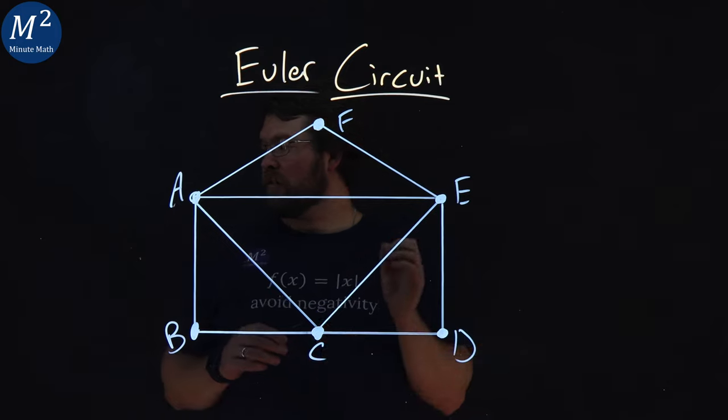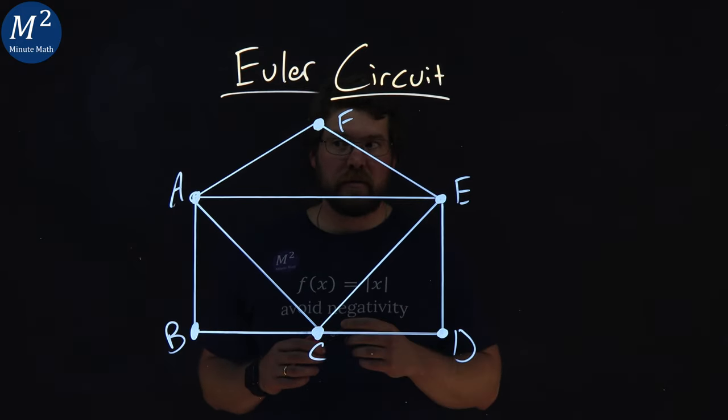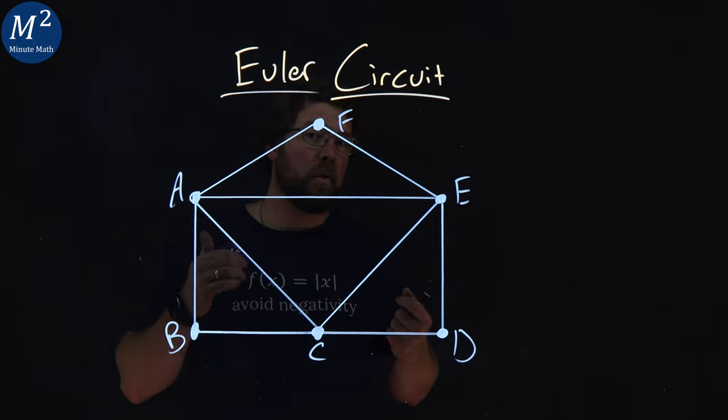Being a circuit, it must start and end at the same vertex. So let's go find an Euler circuit here.